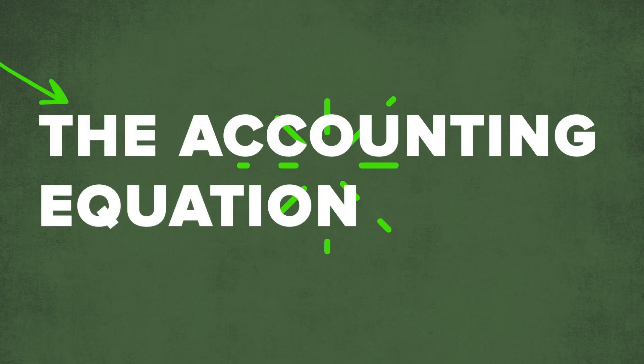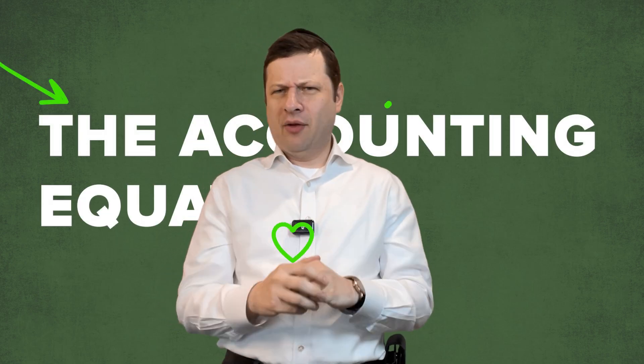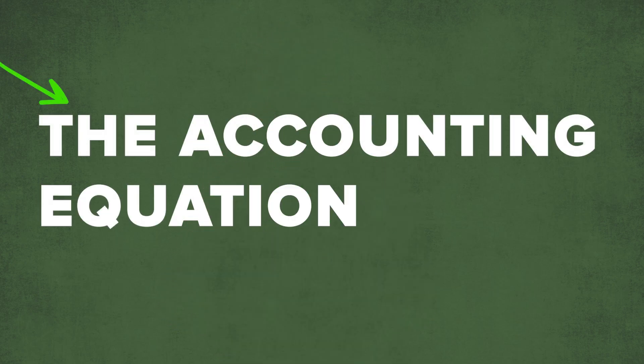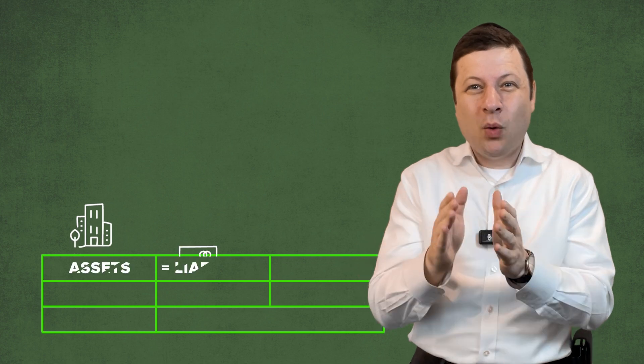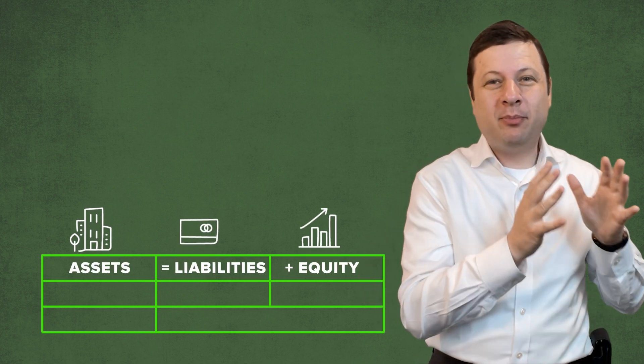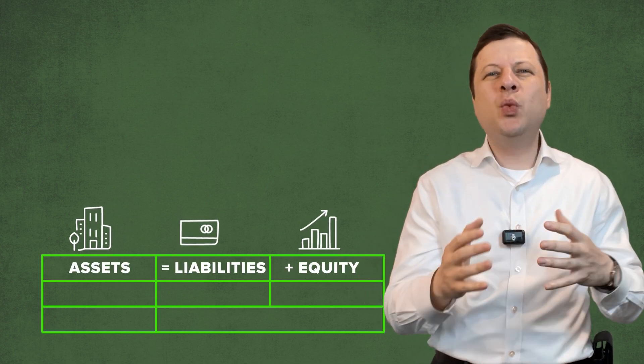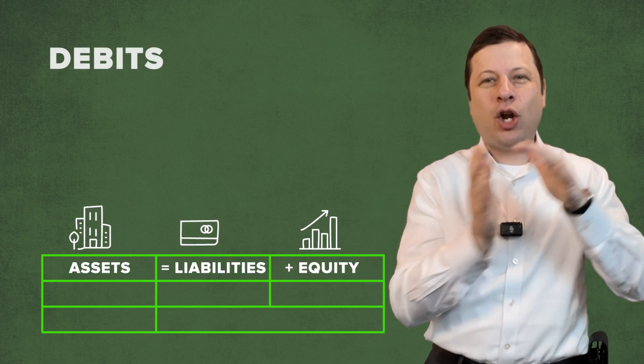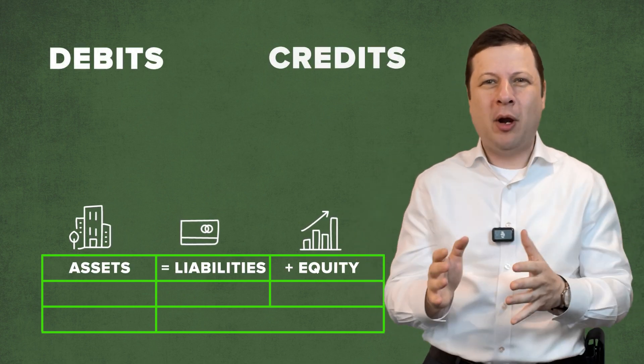The accounting equation — the heart of accounting — lies in a simple formula: assets equals liabilities plus equity. This is where debits and credits come from.